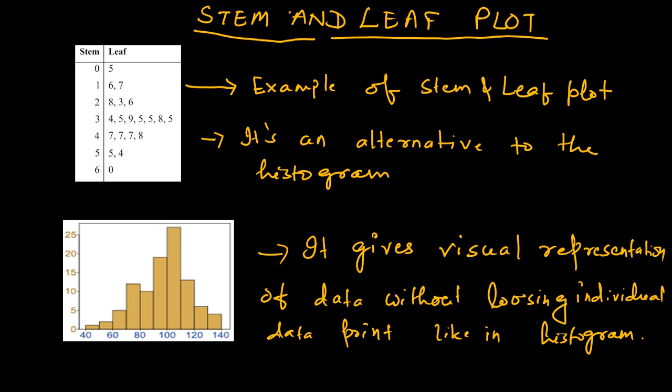We'll learn what is a stem and leaf plot. The stem and leaf plot looks like this - it has a series of numbers known as stem and a series of numbers known as leaf. We'll try to understand what it really means and what it represents. This is an example of it.